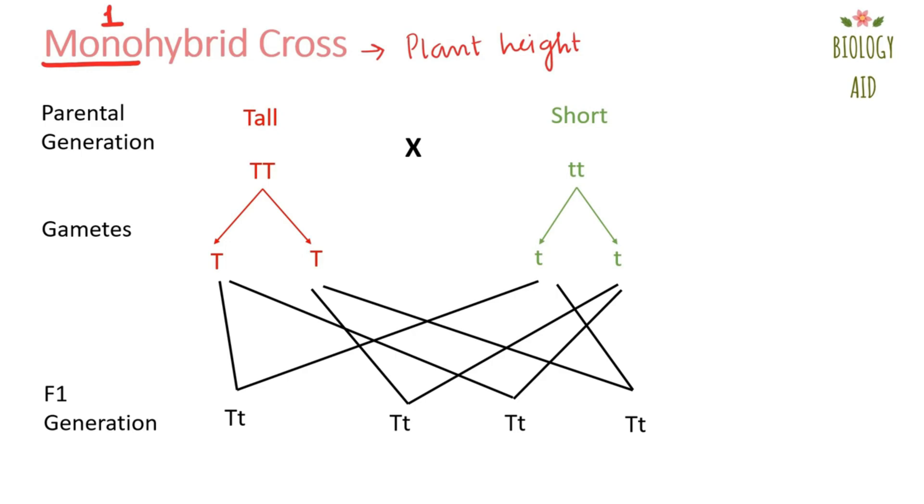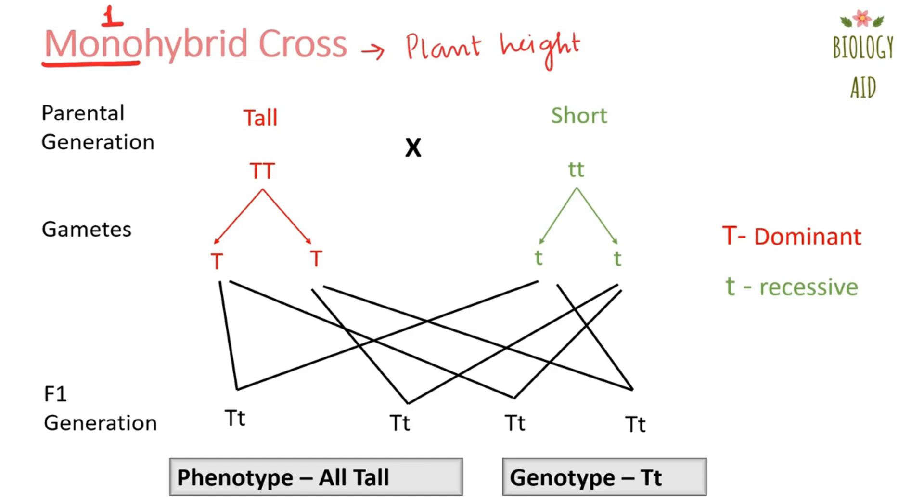When Mendel did this experiment, he found that all the pea plants in the F1 generation were tall. Whenever we refer to physical character such as plant height, tall or short, we call it phenotype. And the genetic composition or genes that are responsible for this physical character, we refer to with the term genotype. So, what Mendel observed is that all pea plants of the first filial generation were of tall phenotype, which led us to understand that when capital T and small t are present together, then only capital T is expressed and the small t cannot express itself. To explain this, Mendel said that capital T is dominant and small t is recessive.